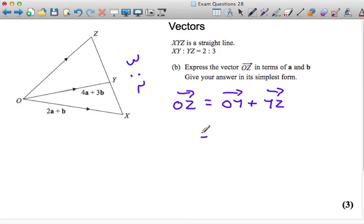So that means I can say that it's OY, which is 4A plus 3B, plus one and a half or three over two times XY. And we found XY in the previous part of the question, and it turned out to be 2A plus 2B. So it's just one and a half times that vector.